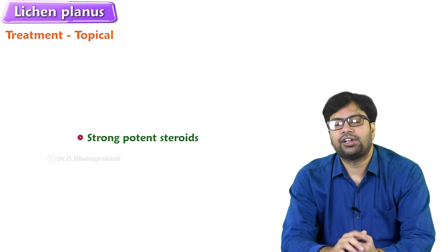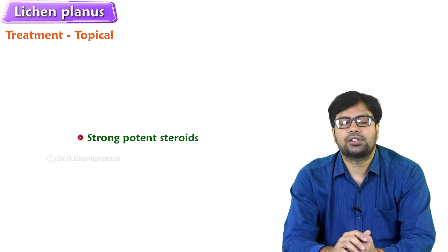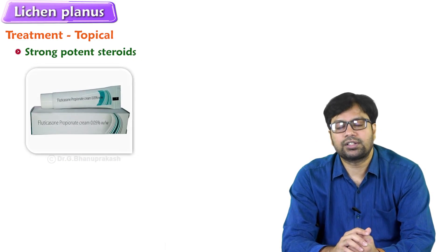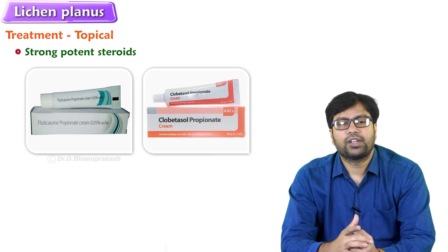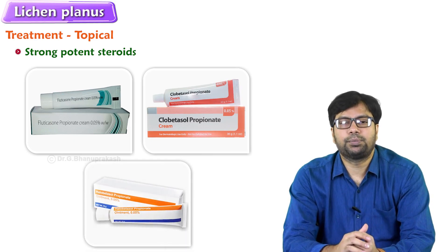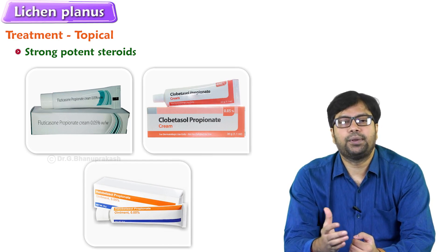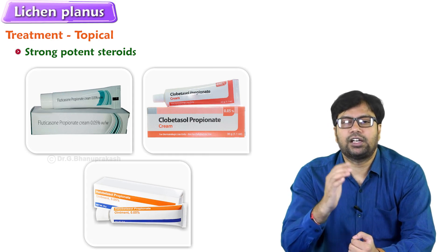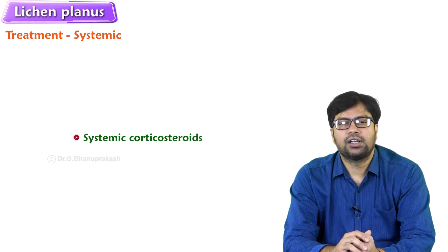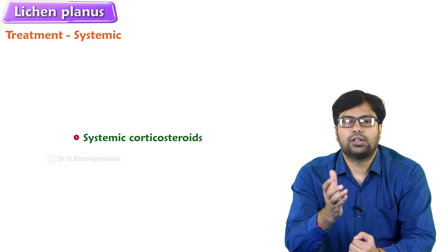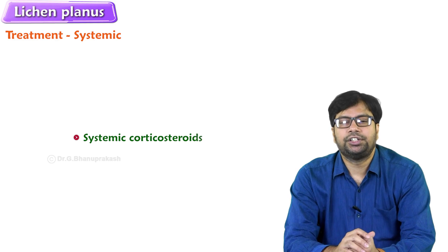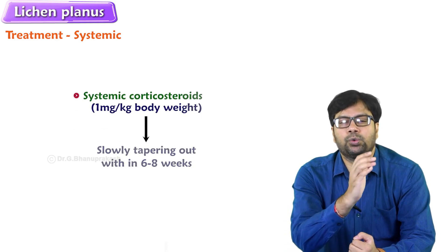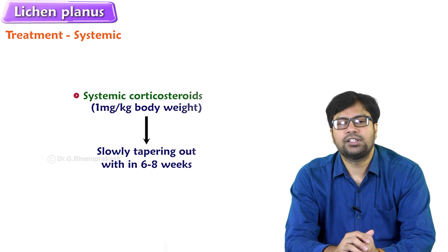For topical treatment, the first choice is strong potent steroids — that is fluocinolone acetonide, clobetasol propionate, or halobetasol — under occlusive treatment, along with good moisturizers and non-sedative antihistamines, which will help in reducing the symptoms. If this is not helping, we approach systemic treatment. The first treatment of choice is systemic corticosteroids, starting from one milligram per kg body weight and slowly tapering within six to eight weeks.